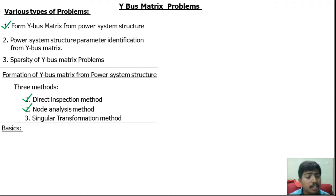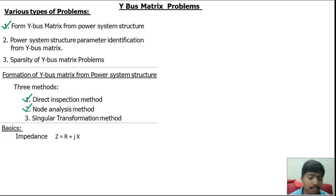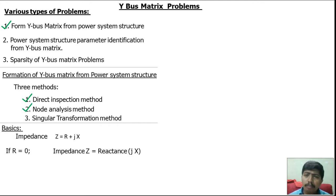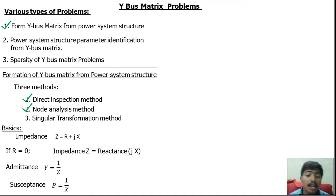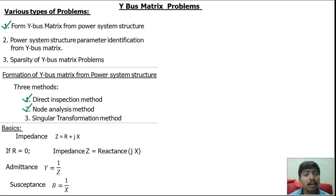Before discussing these concepts, you should know the basics. Impedance is equal to resistance plus reactance. If resistance is zero, impedance is equal to reactance. Y means admittance — admittance is the inverse of impedance. Susceptance B is equal to the inverse of reactance. The Ybus matrix is used for load flow studies, but the Zbus matrix is used to find the fault current analysis.